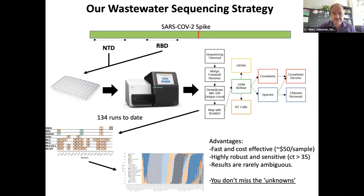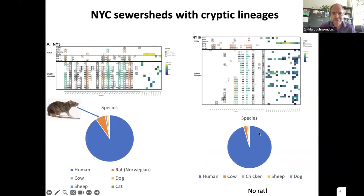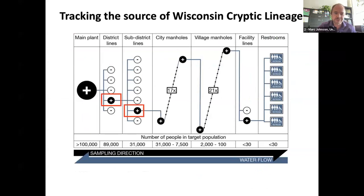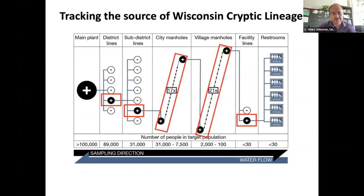The important part is we don't miss the unknowns. There are all these places where we started to find lineages that just did not match anything. For the longest time we thought they were coming from an animal reservoir. We call these cryptic lineages. We found 50 of these to date. Sometimes we find them ourselves, and sometimes I dig through Mariana's data.